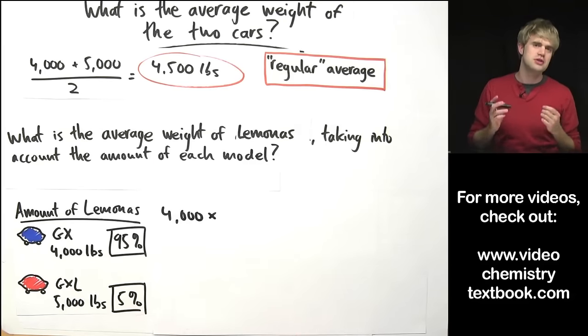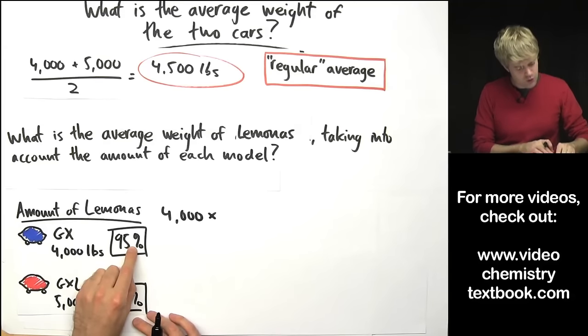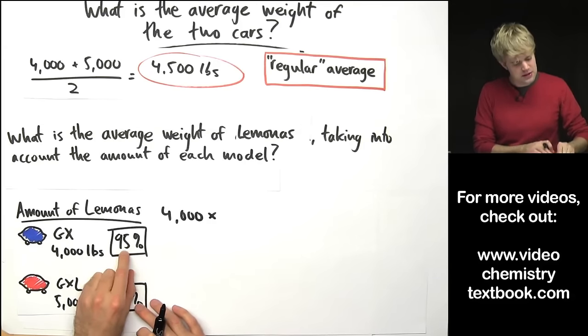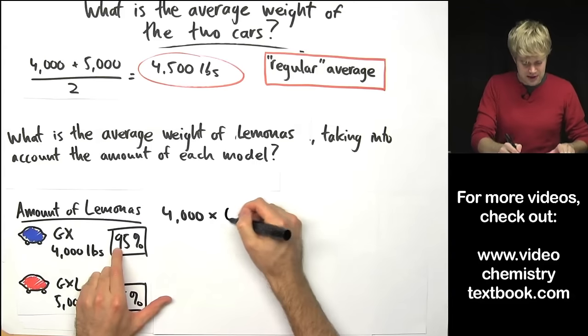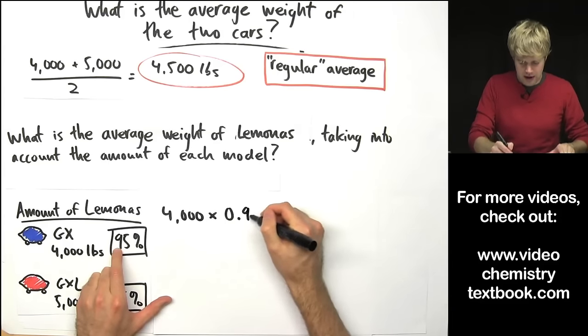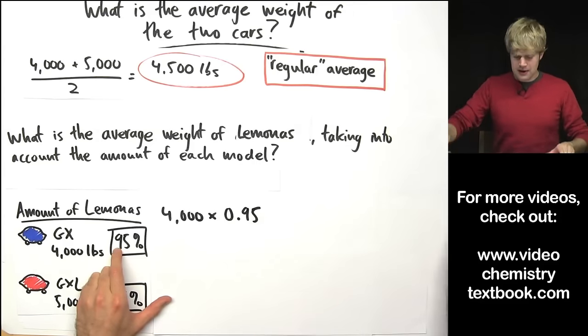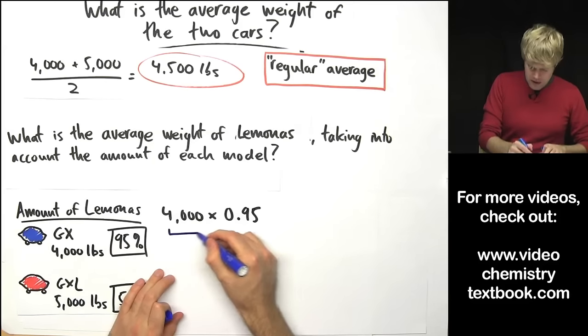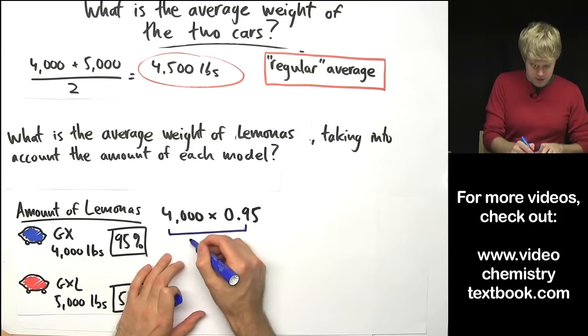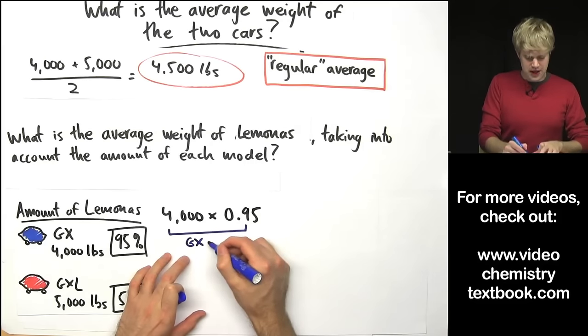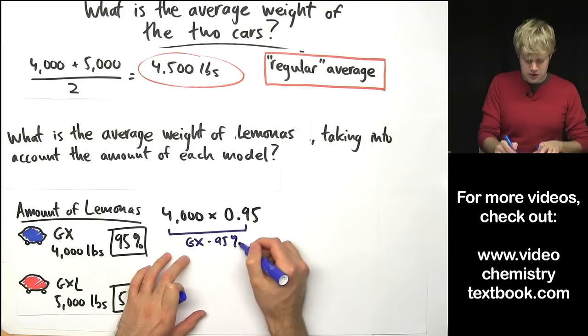I have to turn this percentage into a decimal. So the decimal point would be here, I move it two spaces to the left so I'm going to get 0.95. Now what this expression is here is this is the contribution from the GX that I have 95% of.